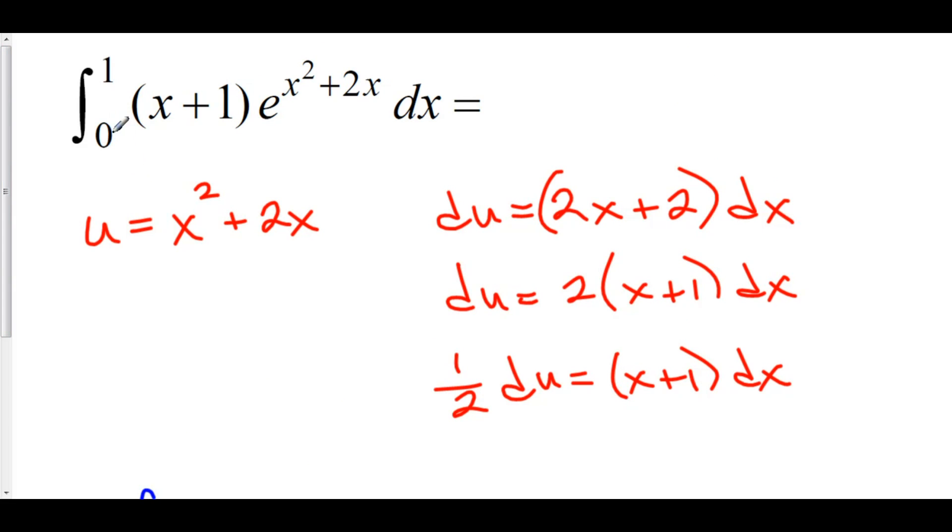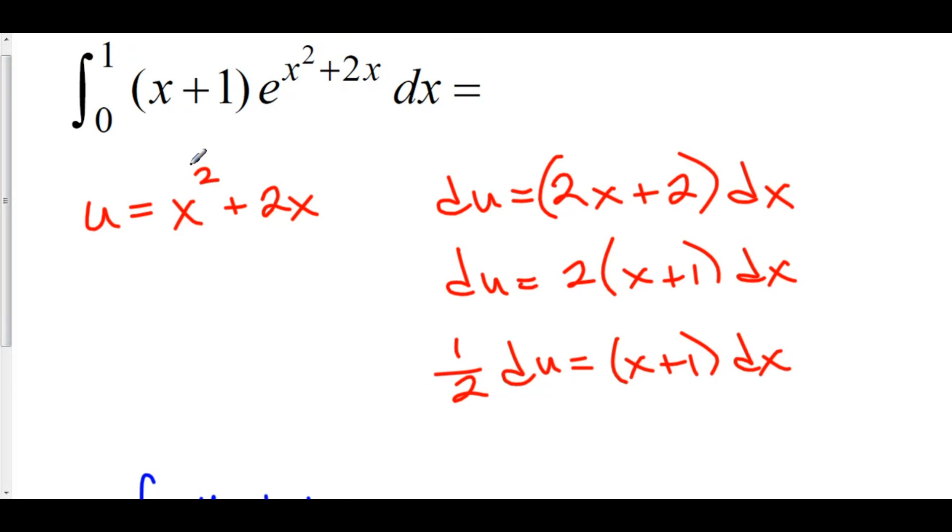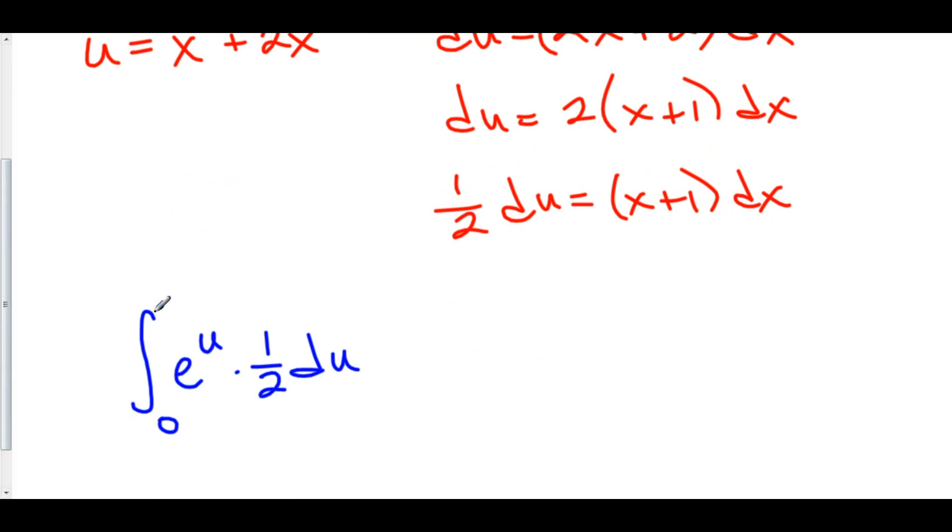To do that, we plug in the lower limit and the upper limit into x, and we solve for u. So, we'll plug 0 in, 0 squared plus 2 times 0 is still 0, and now we'll plug 1 in. 1 squared plus 2 times 1 is 3, so we're going from 0 to 3 now.